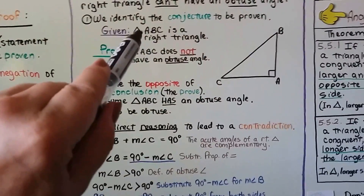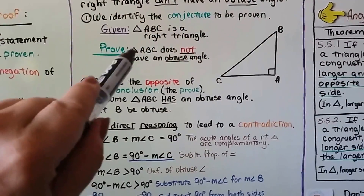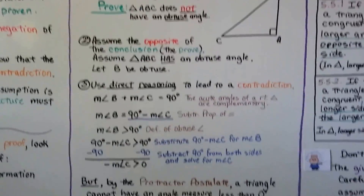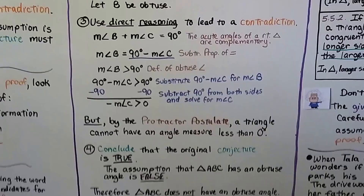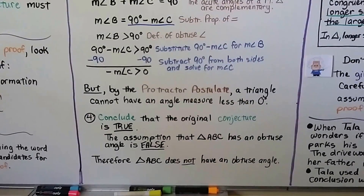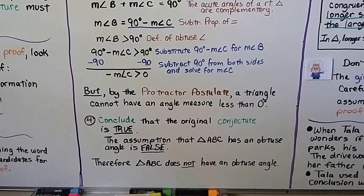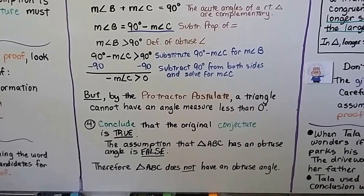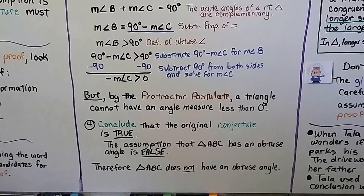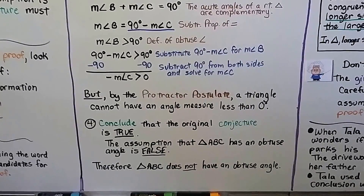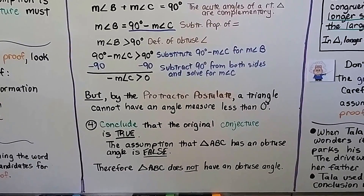That triangle ABC does not have an obtuse angle. The assumption that triangle ABC has an obtuse angle is false. Therefore, triangle ABC does not have an obtuse angle.